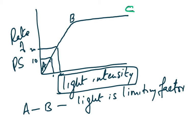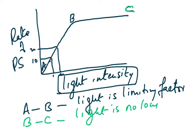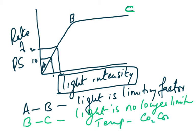From point B to point C, the graph levels off — light is no longer limiting. Some other factor is now limiting, which could be either temperature or CO₂ concentration. Even if you wrote 'some other factor limiting' between B and C, that would also get you a mark.